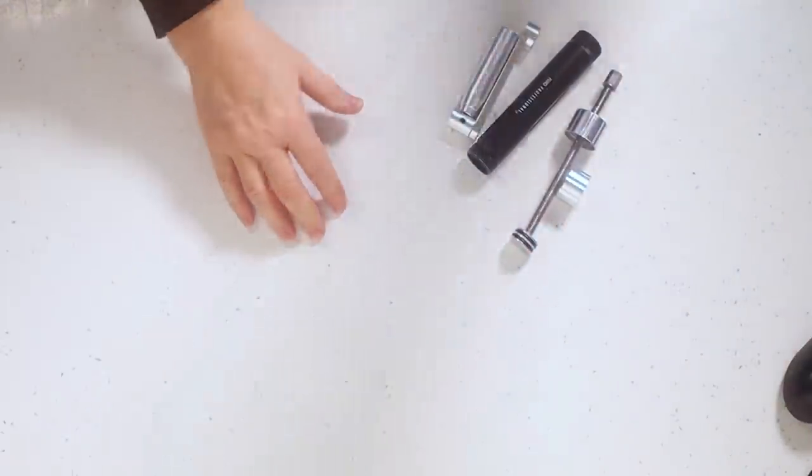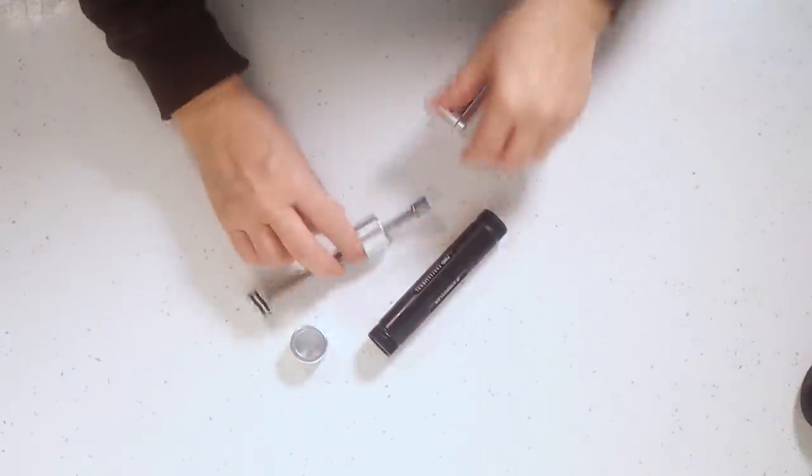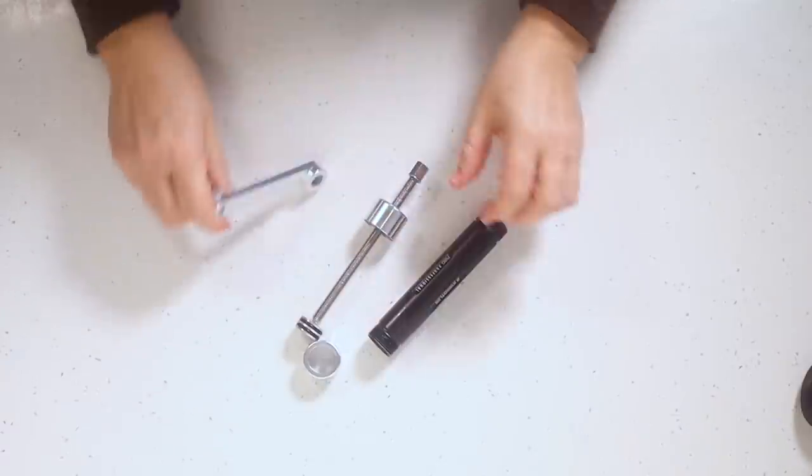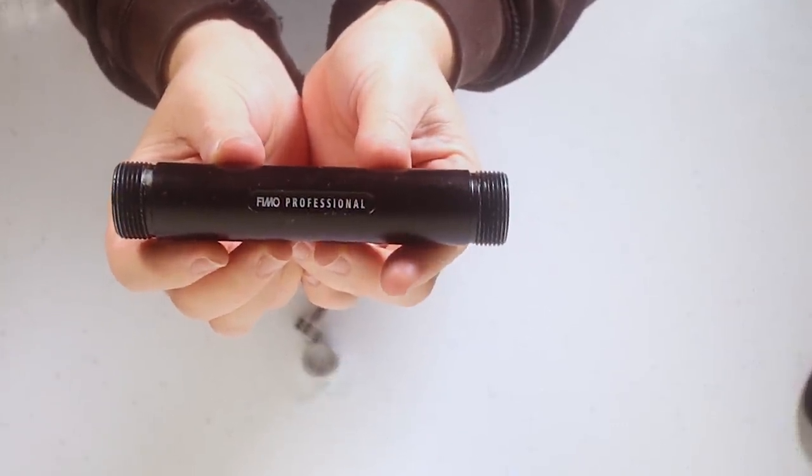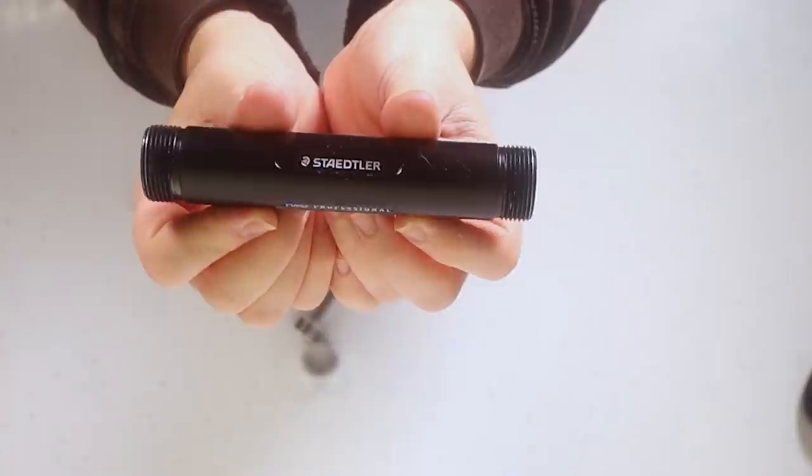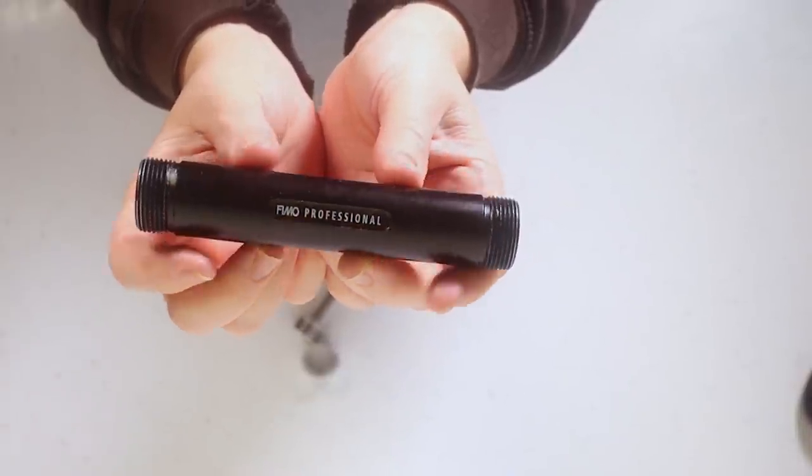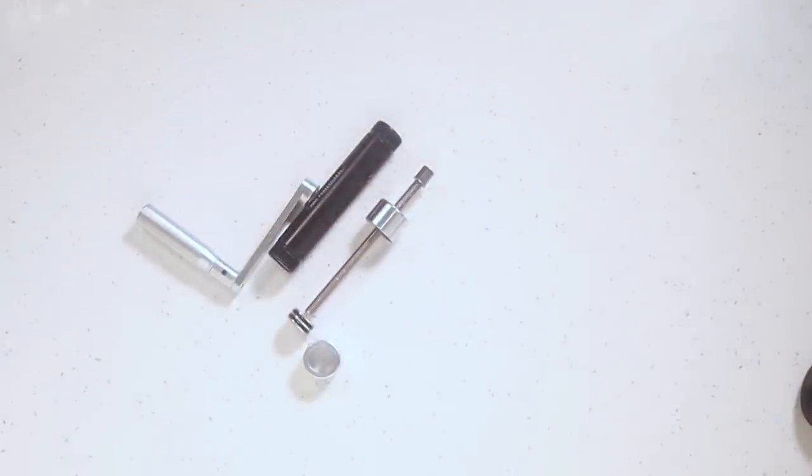Just before I start, I get a lot of questions about the extruder that I use. Mine is a Fimo Professional extruder. I really do like this extruder—I think it's great. It takes a larger size disc than the Makins and a lot of the ones that you get on Amazon, and it's made really really well. So if you are looking for one, this would be the extruder that I would advise.